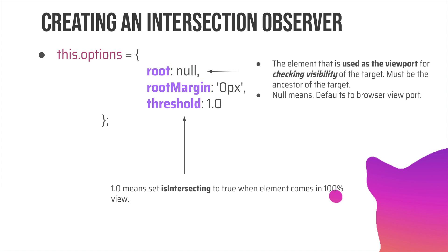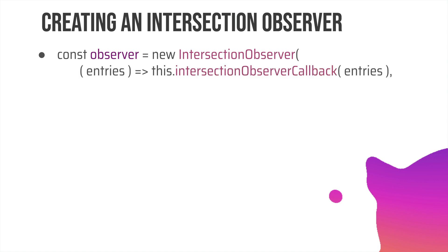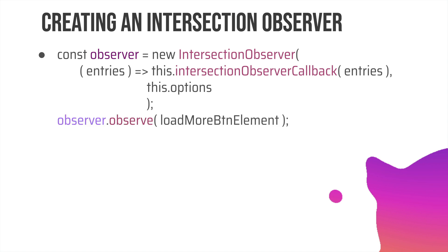Now that we have all the options defined, we can pass them to our observer. We say: observer equals new IntersectionObserver — the first parameter is the callback function and the second parameter is the options. Inside the callback we pass entries and this.intersectionObserverCallback, which is our custom callback function. Inside that callback function we'll have access to isIntersecting, and we can call the load more function. We also pass the options — root, rootMargin, and threshold — as the second parameter.